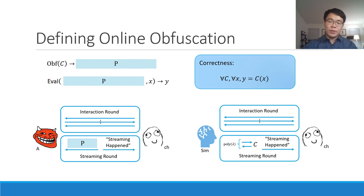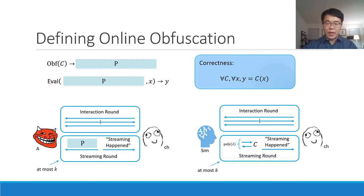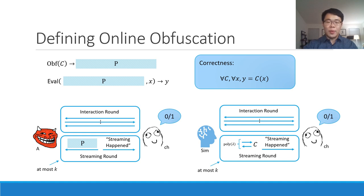Notice that these rounds do not need to happen in order — it can be interaction rounds followed by streaming rounds and then more interaction rounds. However, we do bound the total number of streaming rounds to at most k. If the challenger sees more than k streaming rounds, it aborts and outputs 0. Additionally, at any time the challenger can terminate the experiment by outputting a single bit 0 or 1.